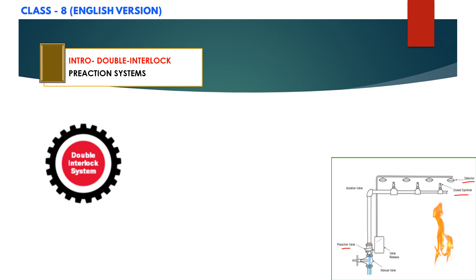It means these two events must occur before water enters into the system piping. Activation of the detection system alone or operation of sprinkler system alone will sound an alarm but will not cause the system to fill with water.